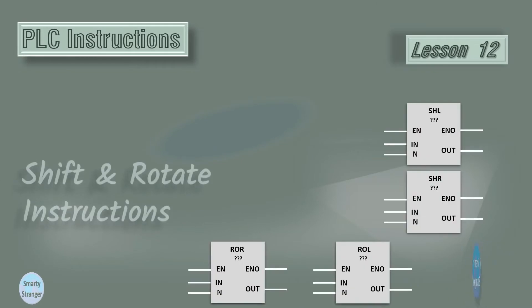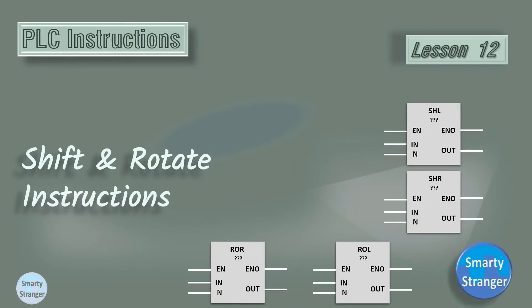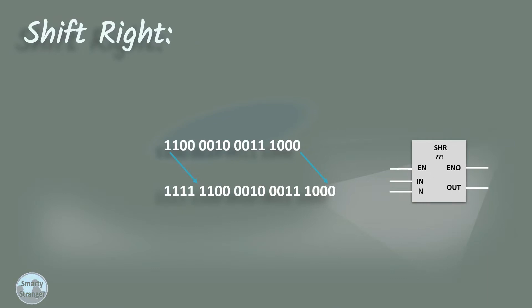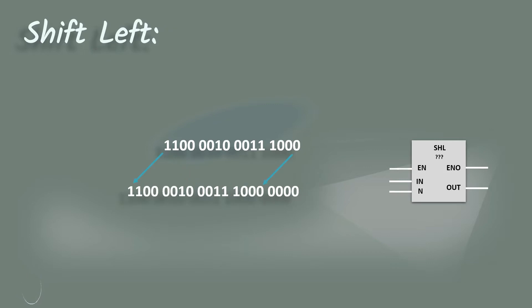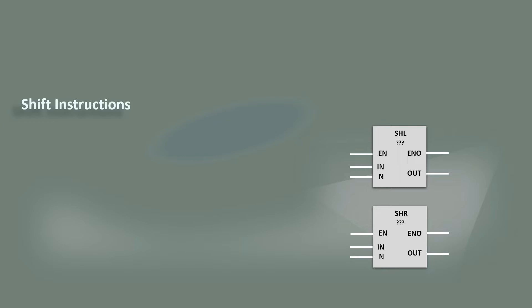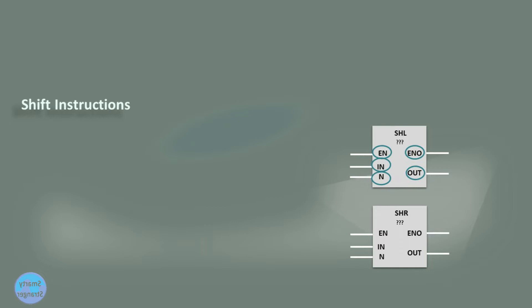Today we will learn about shift and rotate instructions in PLC. The shift instruction is used to shift the content of the input value bit by bit to the right or left. Shift right and shift left instructions have the same shape, input and output parameters. In the symbol, the EN pin is used to enable the instruction, ENO shows the enabled status, IN pin is used for input value, OUT pin is used to show the result after shifting of bits, and the N parameter specifies the number of bit positions to be shifted.